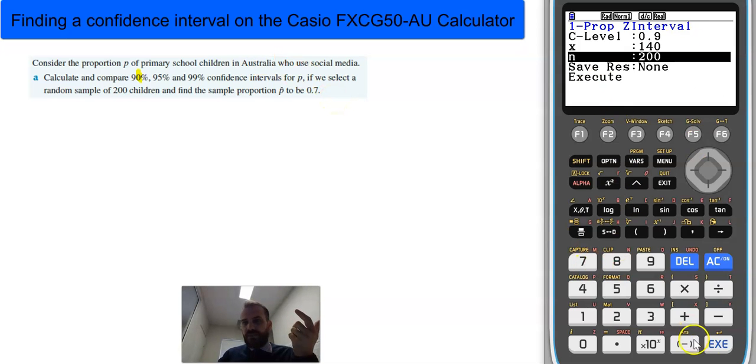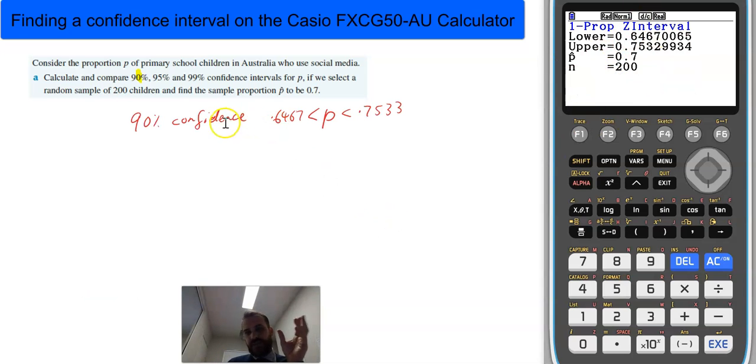From here, we just click execute, and we get these numbers here. It means that I am 90% confident that the population proportion is between 64.67% and 75.33%.